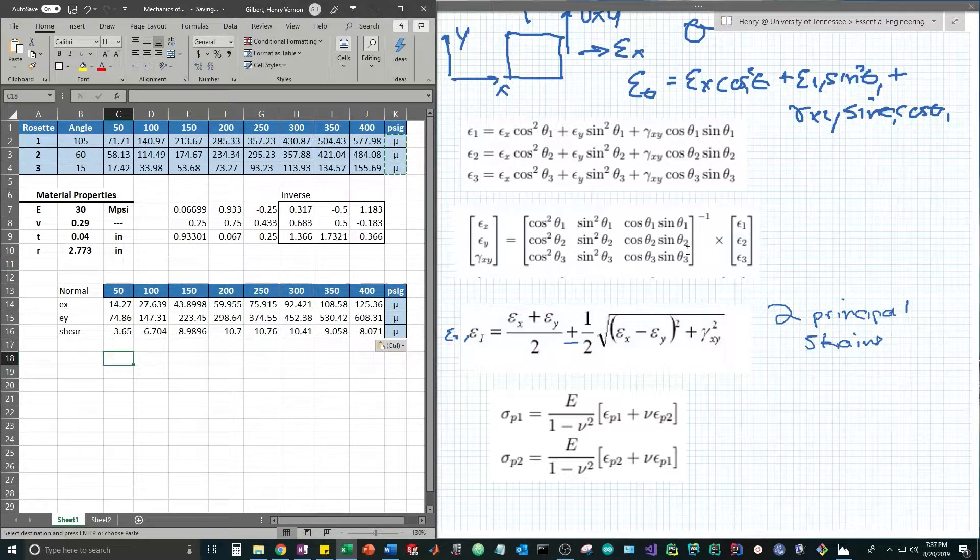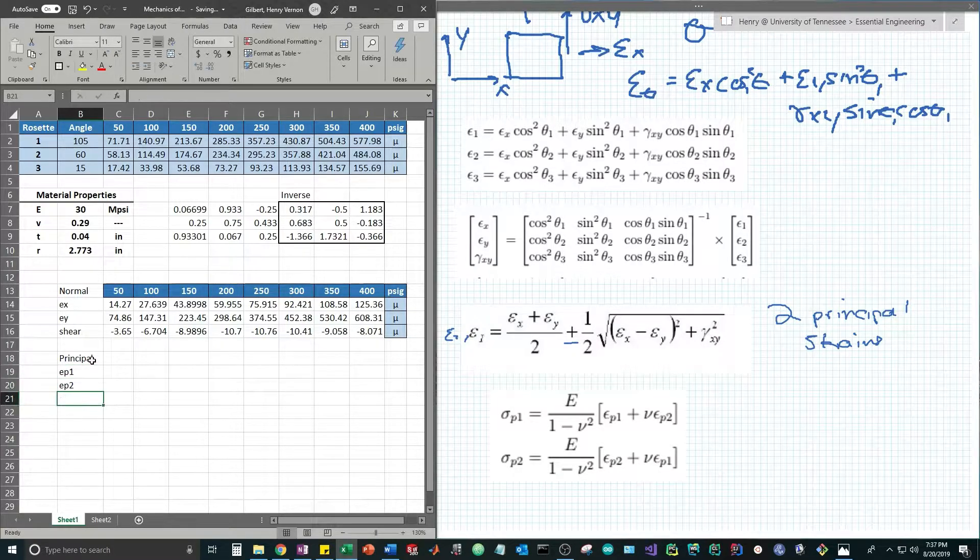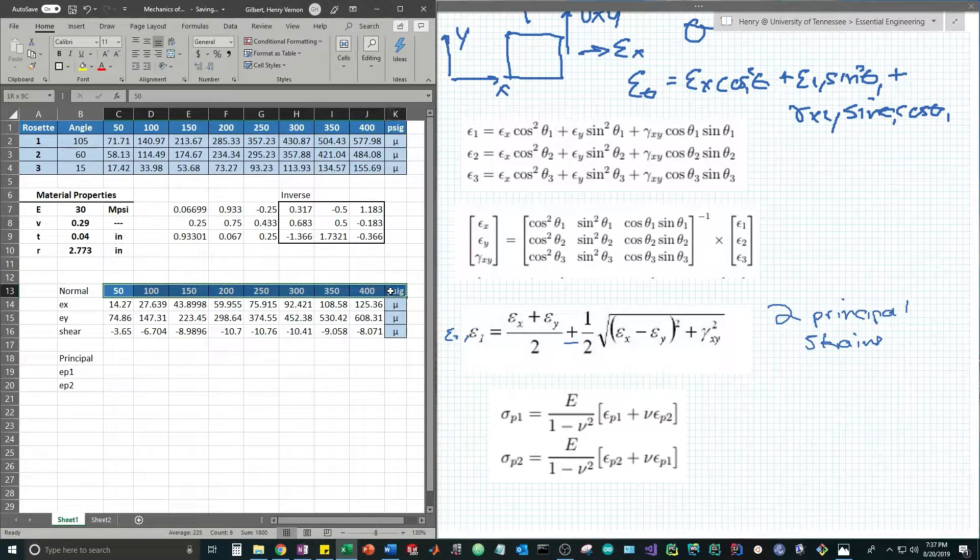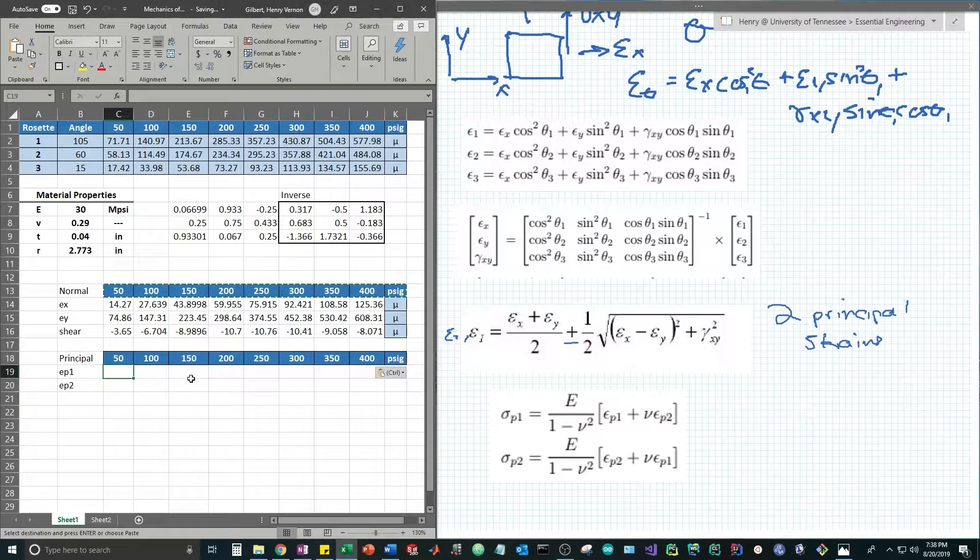We've completed this step in the equations. Now let's find the principal strains. We have two principal strains, epsilon p1 and epsilon p2. We're simply going to copy this formula over at each pressure value to calculate the principal strain at that state.